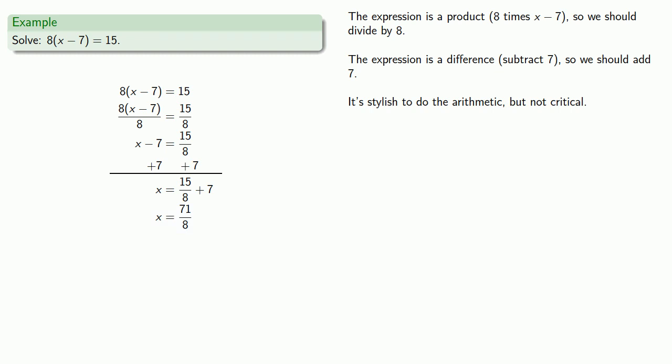And importantly, when you go to check your solution, it turns out that this form, 15 over 8 plus 7, the unreduced form, is actually easier to work with. So we'll check our solution, x equals 15 over 8 plus 7. Every time we see x, we'll drop in 15 over 8 plus 7. And this expression 15 over 8 plus 7 minus 7 gives us 15 over 8. And we see that's a true statement, and so our solution is 15 over 8 plus 7.